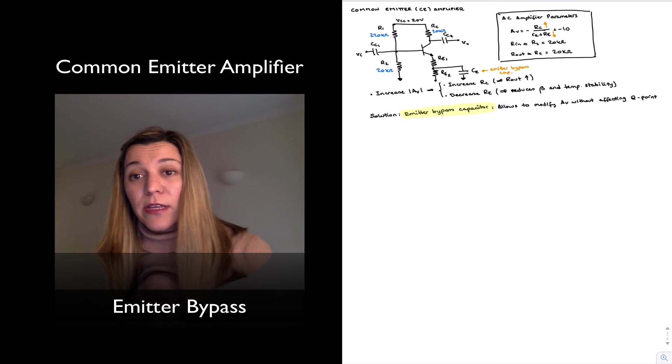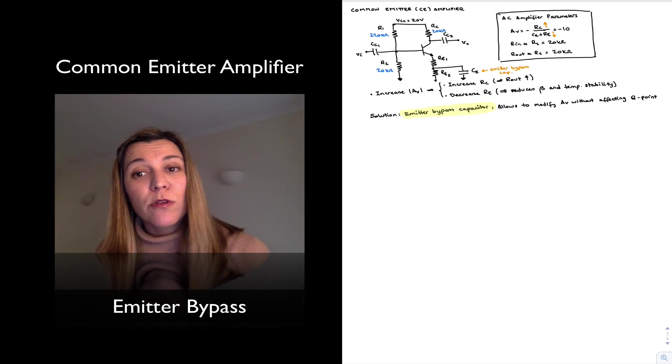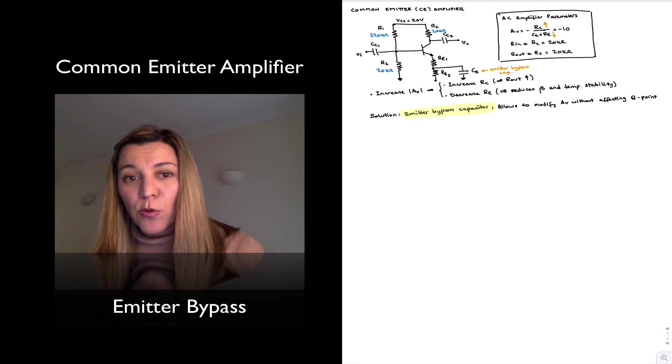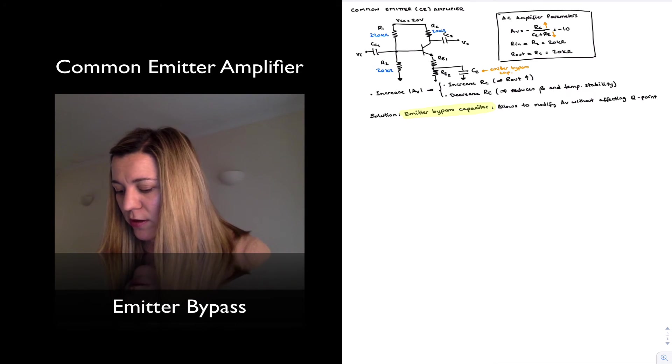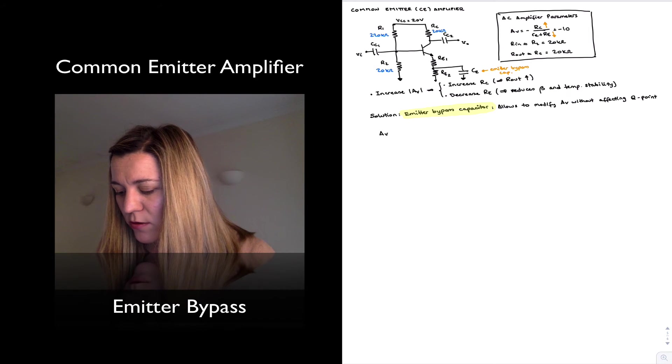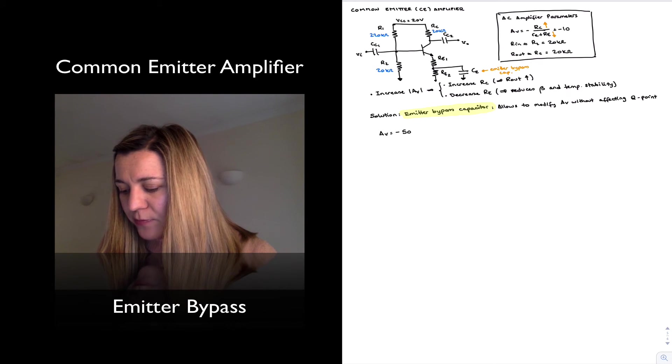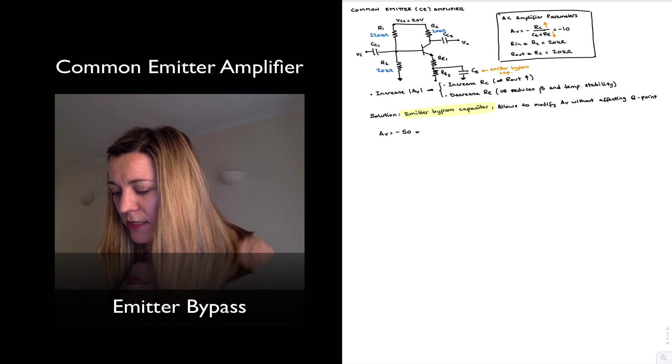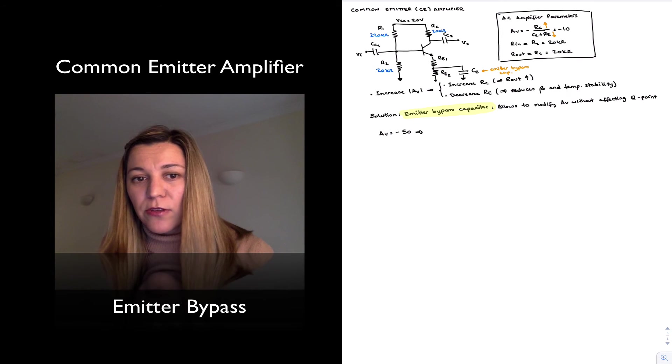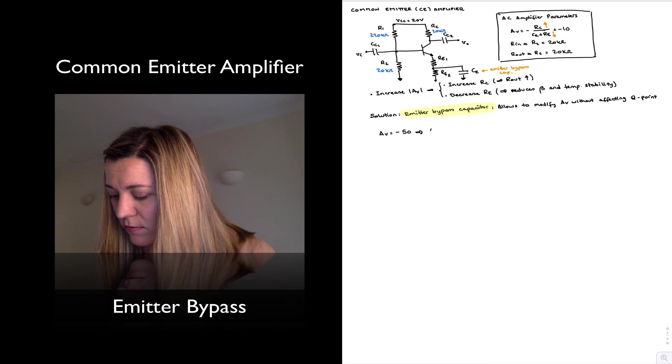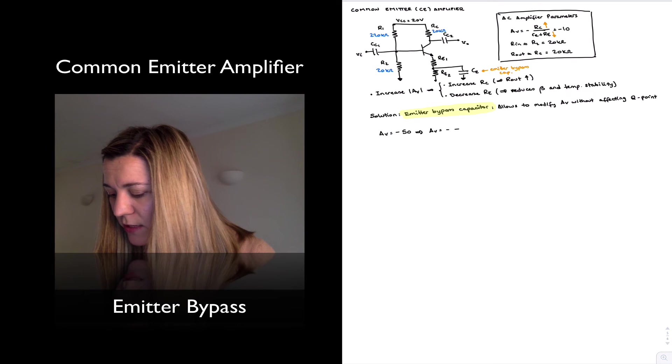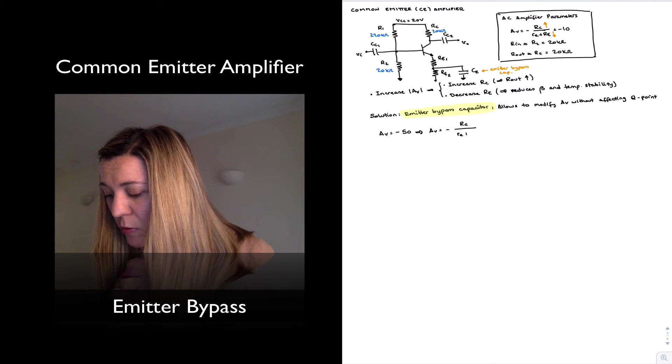So let's take a look at the calculation for how we will calculate these resistors RE1 and RE2 to achieve a value of gain that we want. Let's say, for example, we want our gain to go up to negative 50. Well, in this case now, we have that our gain is equal to negative RC divided by little RE plus RE1.